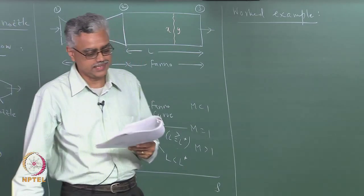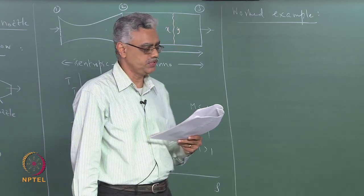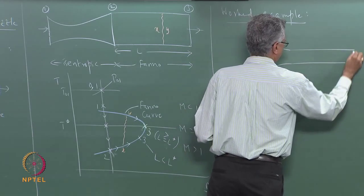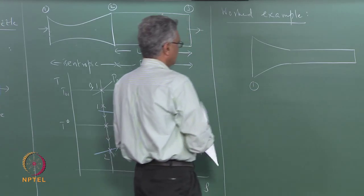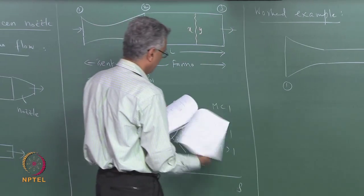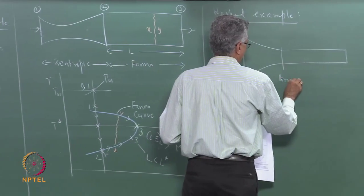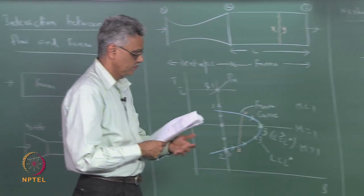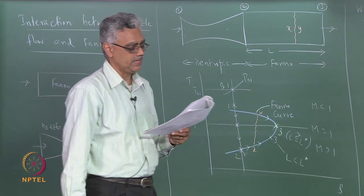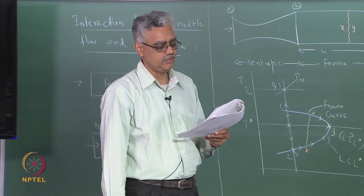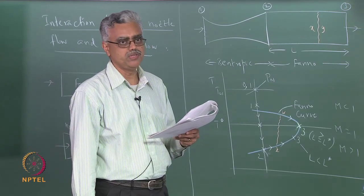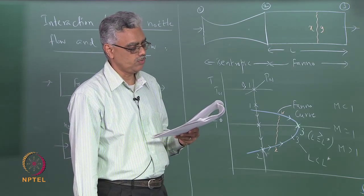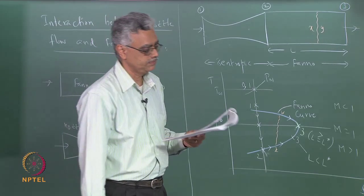The first example: air flows through a nozzle-pipe combination. The stagnation conditions at the nozzle inlet are 1 MPa and 500 K. The pipe diameter is 0.05 m and it is 5 m long. Determine the reduction in mass flow rate due to the presence of the pipe. Take friction factor f = 0.024 and back pressure = 100 kPa.